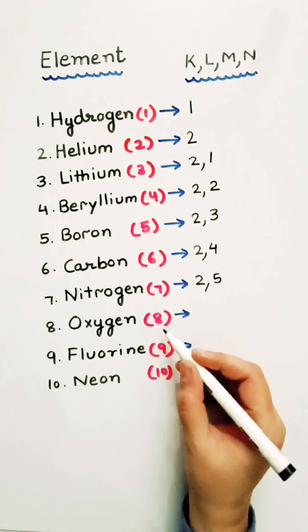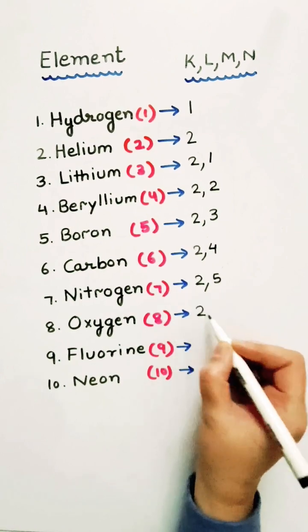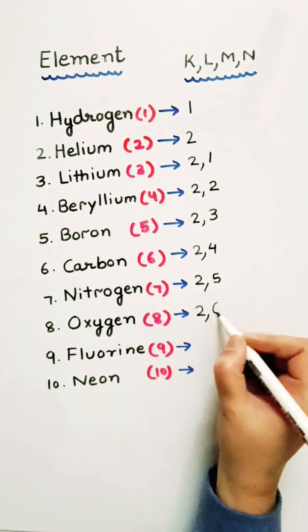Oxygen, we have to distribute 8 electrons. So, this will be 2, 6.